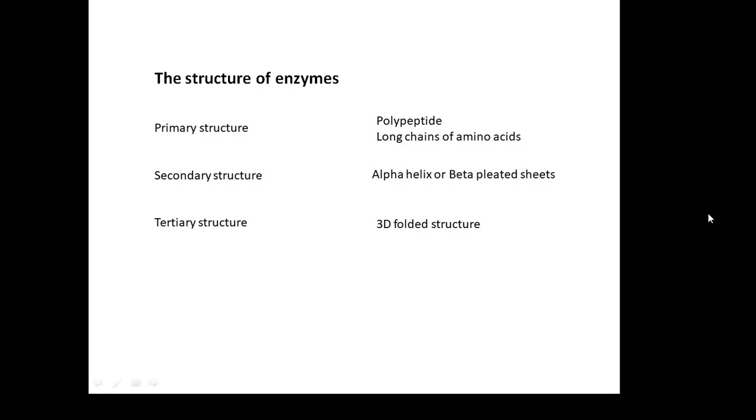The secondary structure: these polypeptides can be arranged into things called alpha helixes or beta pleated sheets. I'll show you what they are in a second, and then the tertiary structure is these sheets all folded together into a 3D structure.